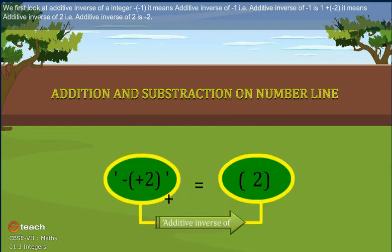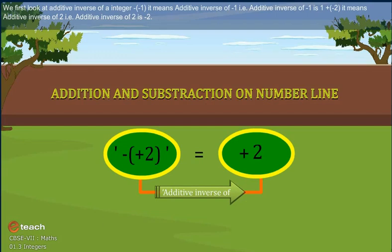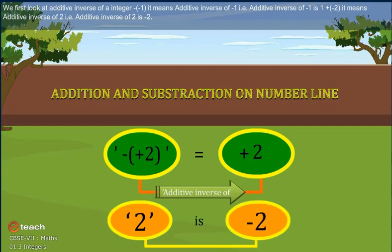Minus bracket plus 2. It means additive inverse of 2. That is, additive inverse of 2 is minus 2.